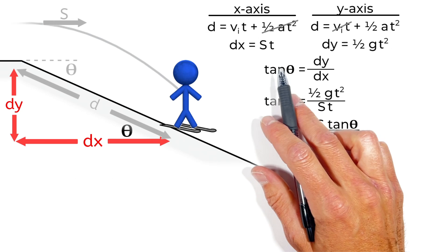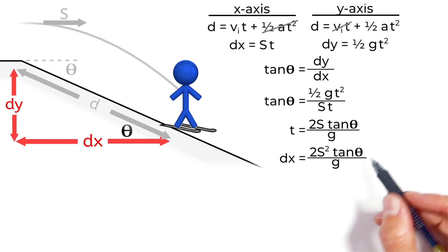So using the x-axis, because that one's the easiest, multiplying our time equation by s is going to give us the displacement in the x-axis for 2s squared tan theta over g.